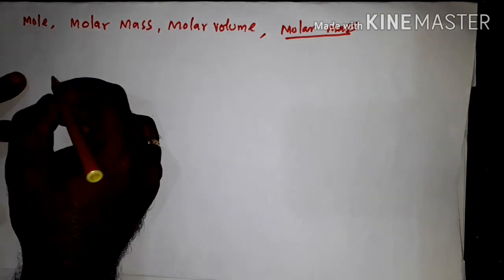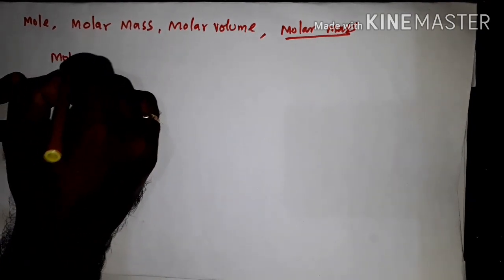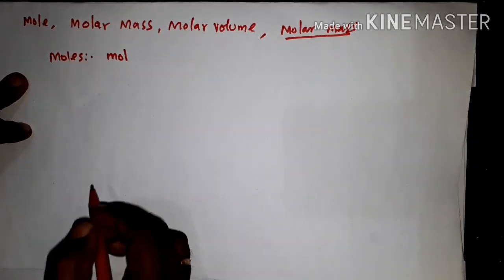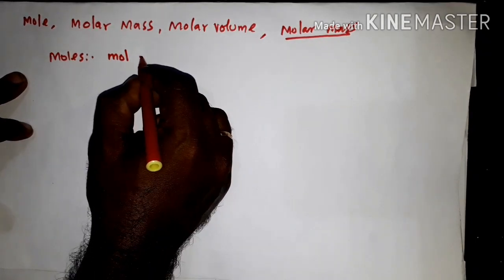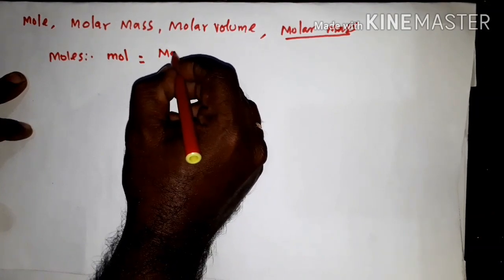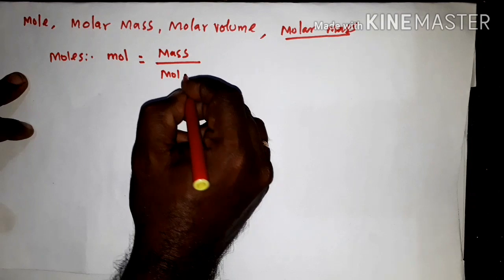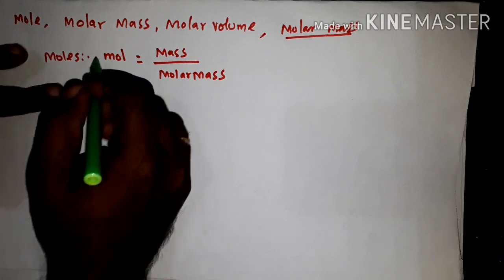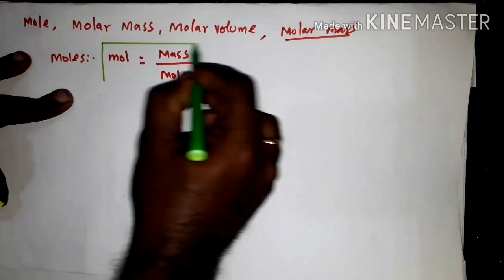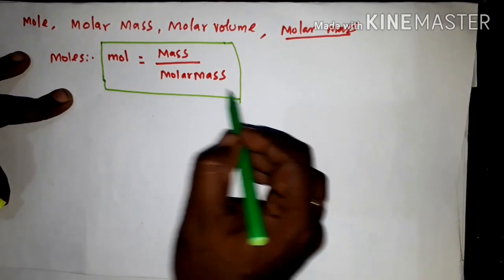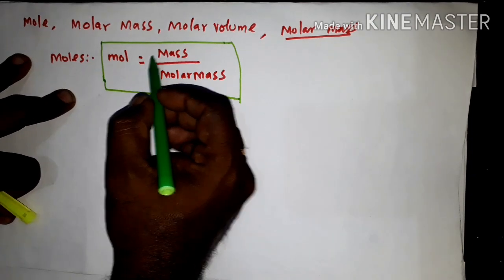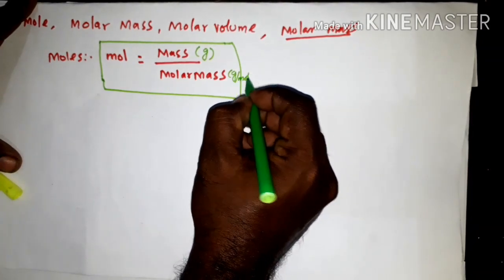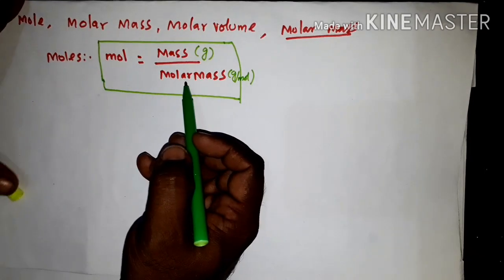To find out the number of moles — we represent moles by 'mol' — the formula is: moles equal to the given mass divided by molar mass. Number of moles equal to the given mass in grams divided by molar mass in gram per mole.